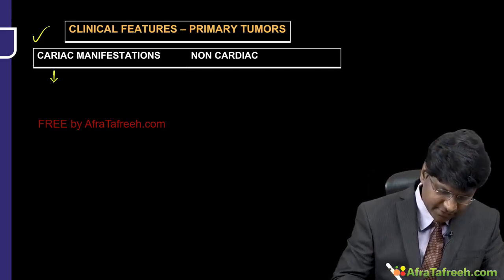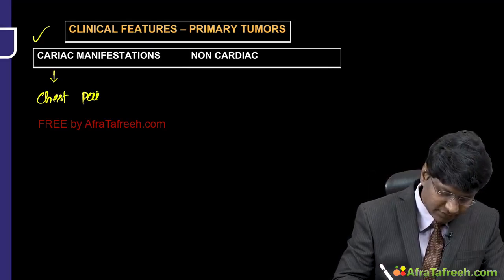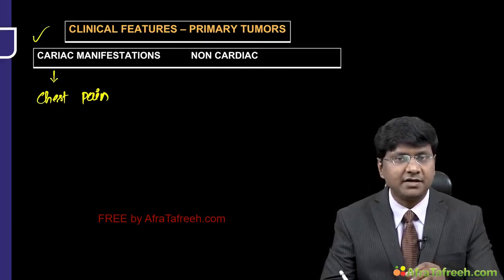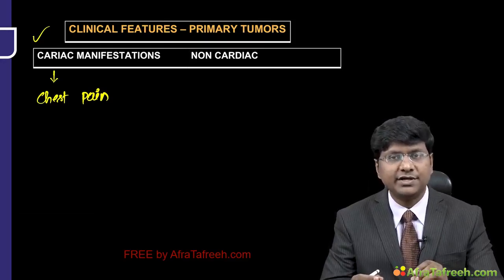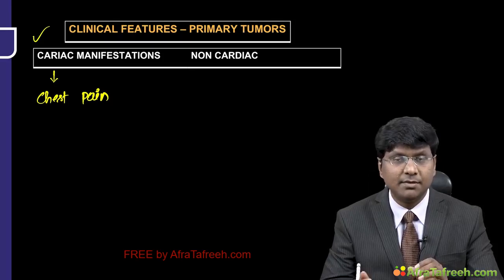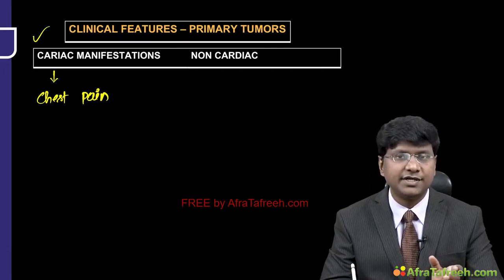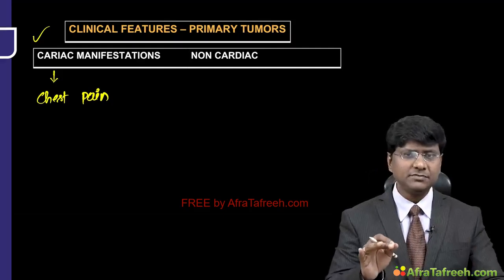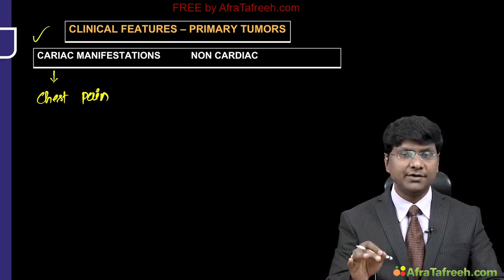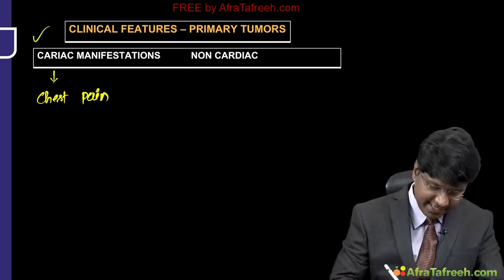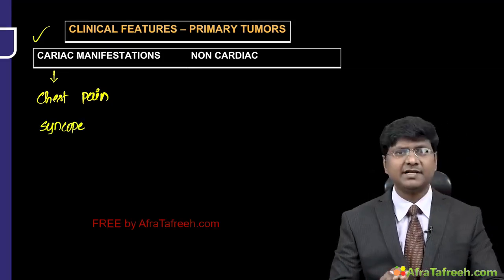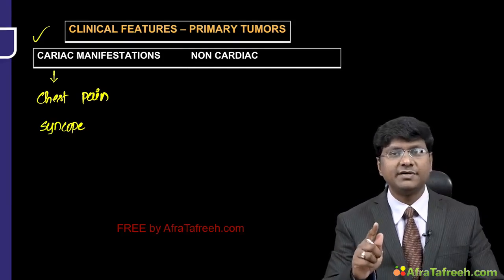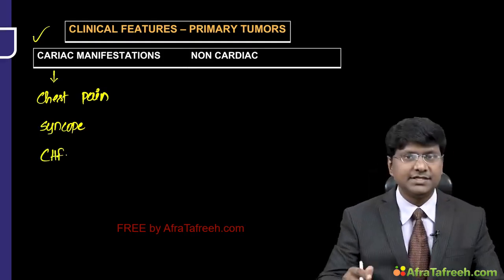One cardiac manifestation is chest pain, with multiple possible mechanisms. For example, if the tumor is at the left ventricular outflow tract, cardiac output is reduced; during exertion, myocardial oxygen demand is more but supply is less, causing angina. Tumors originating from the aortic valve can also reduce cardiac output. Patients can also present with syncopal attack — when outflow is reduced due to obstruction, cerebral perfusion decreases.